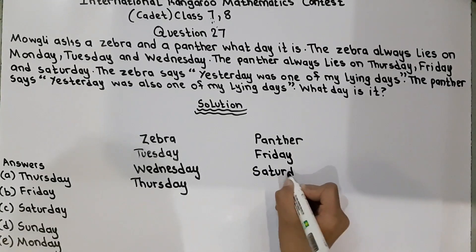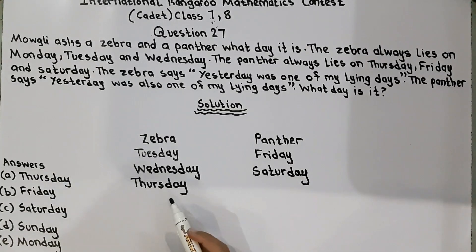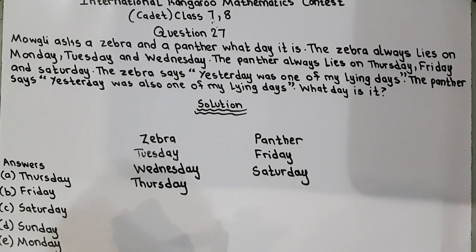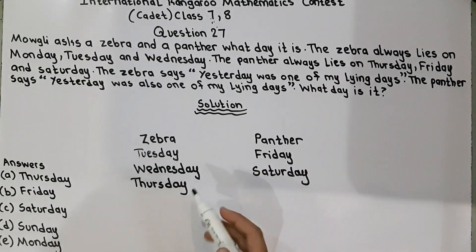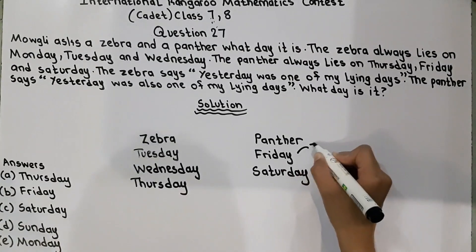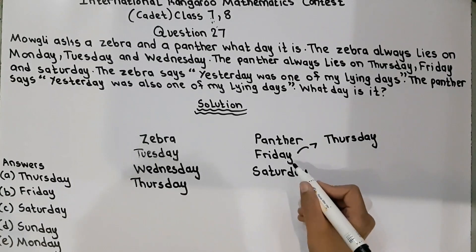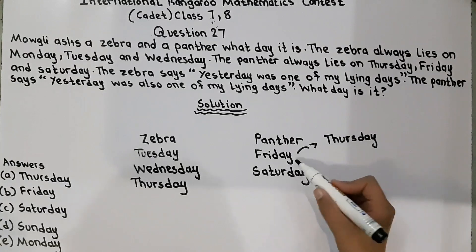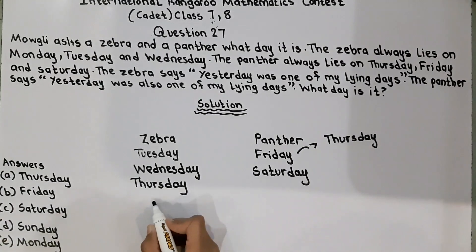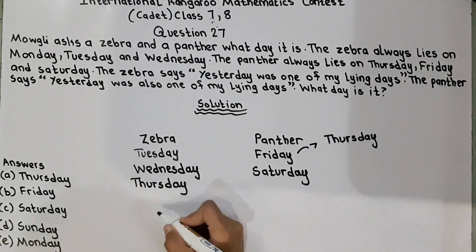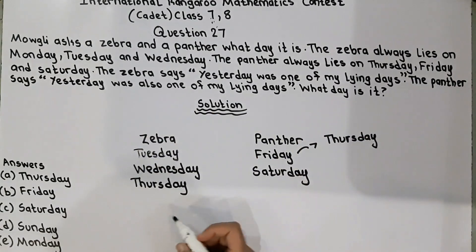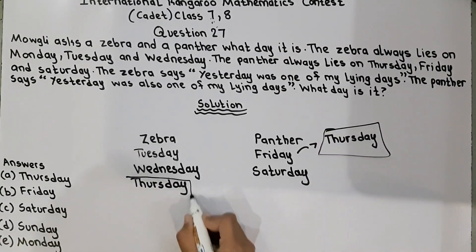Now we have to find what day it was. The zebra said yesterday was one of my lying days, and the panther also said yesterday was one of my lying days. If we go one day back from Friday, it is Thursday. The panther said Thursday was one of my lying days. And the zebra on Thursday said yesterday — which was Wednesday — was one of my lying days. So Wednesday is one of the zebra's lying days. They are both consistent on Thursday, so it is Thursday.